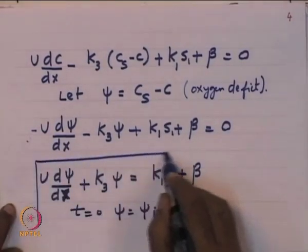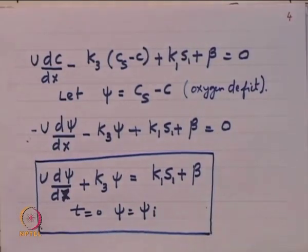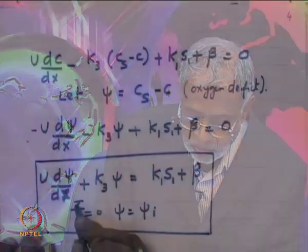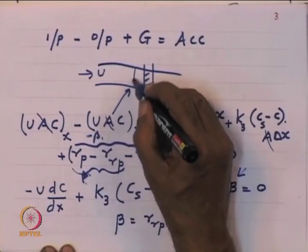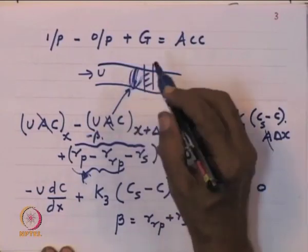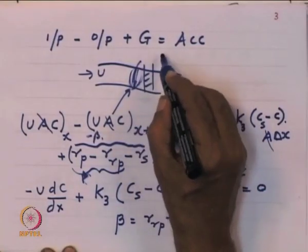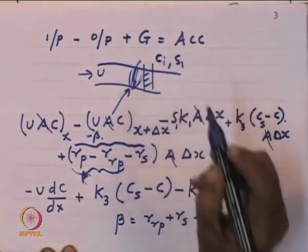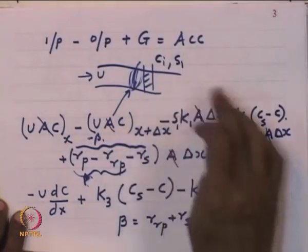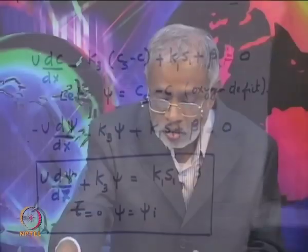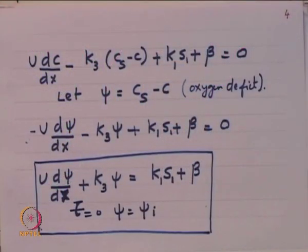This is the equation we need to solve. The initial condition at tau equal to zero is fully specified: ci, the initial oxygen concentration, and S1, the initial pollution load, are both measurable experimentally by taking a sample at the point where waste enters the river. The initial state of the system is fully known, so the equation can be integrated to find the solution.